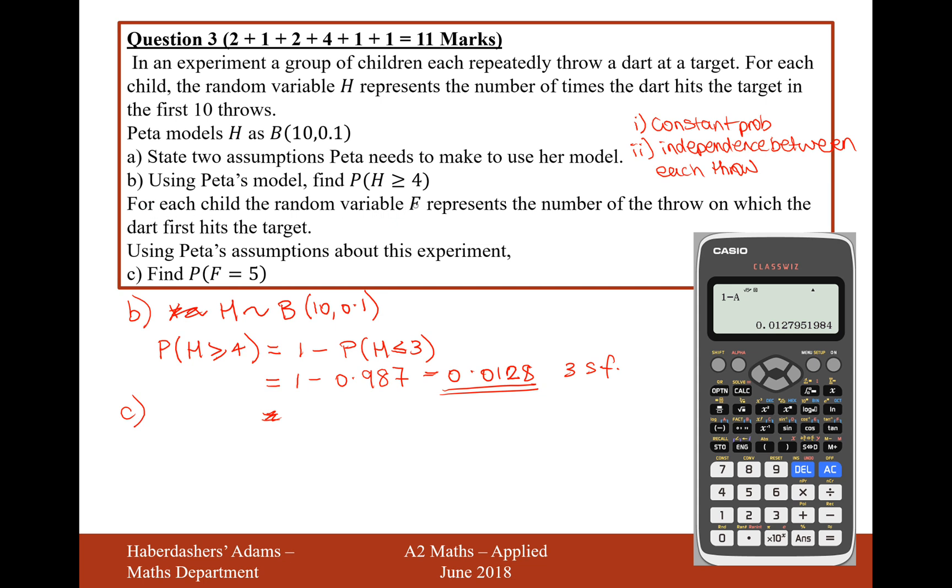Moving on to the next part. For each child, the random variable F represents the number of throws on which the dart first hits the target. Okay, so it's measuring how many darts you need to throw to be able to hit the target. Using Peter's assumption about this experiment, find the probability of F equaling 5. So what that's effectively saying here is find the probability that one child stepping up to the dartboard fails four times and then succeeds on the fifth time.